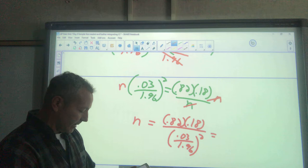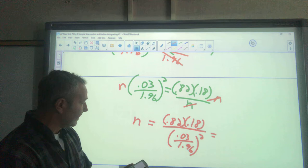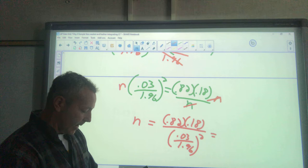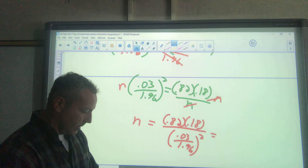I have 0.82 times 0.18 divided by parentheses 0.03 divided by 1.96, close my parentheses, raise that to the second power, and hit enter.